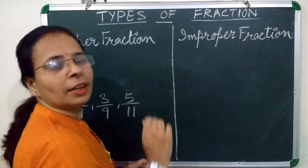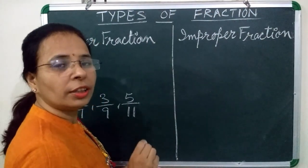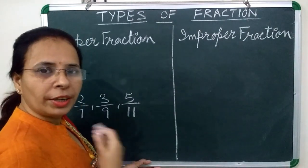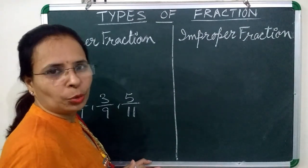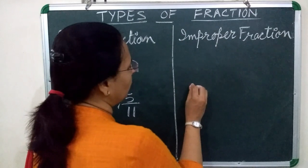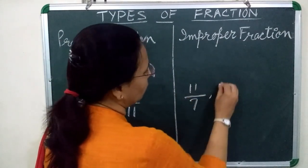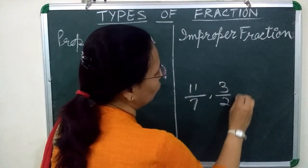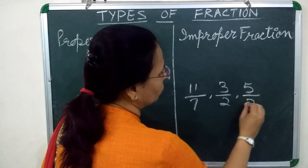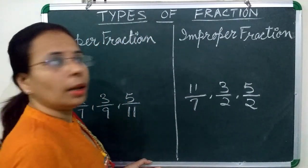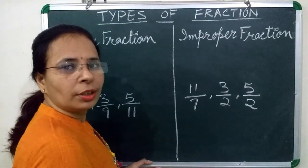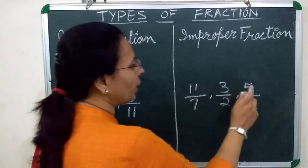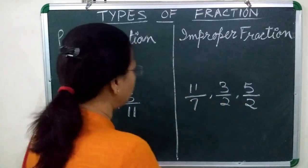Whereas, improper fractions are those fraction in which numerator is greater than denominator. For example, 11 upon 7, 3 upon 2, 5 upon 2. These are improper fraction because their numerators are greater than denominator.